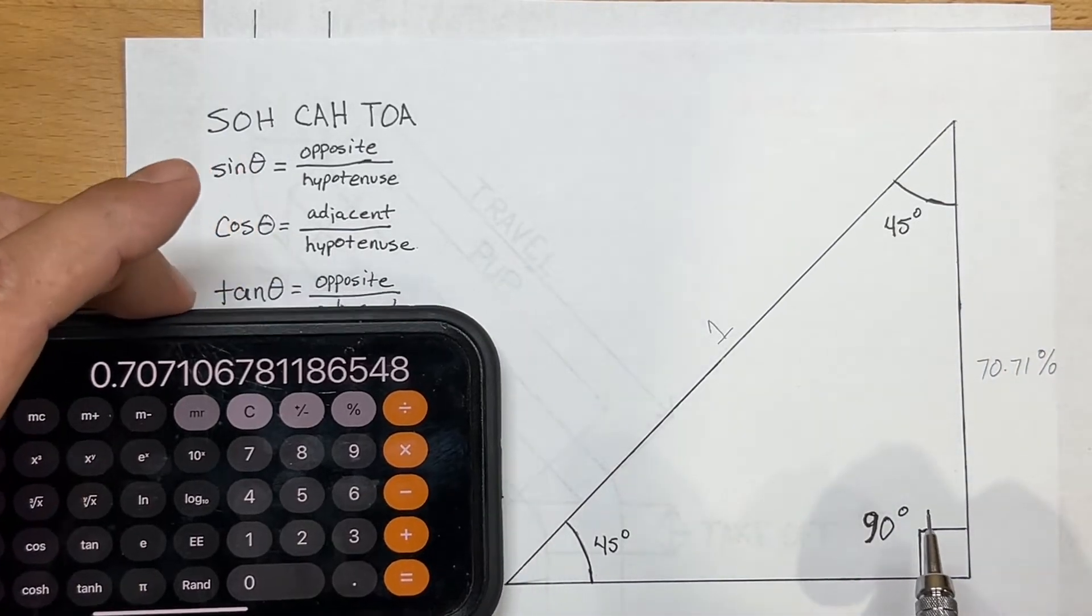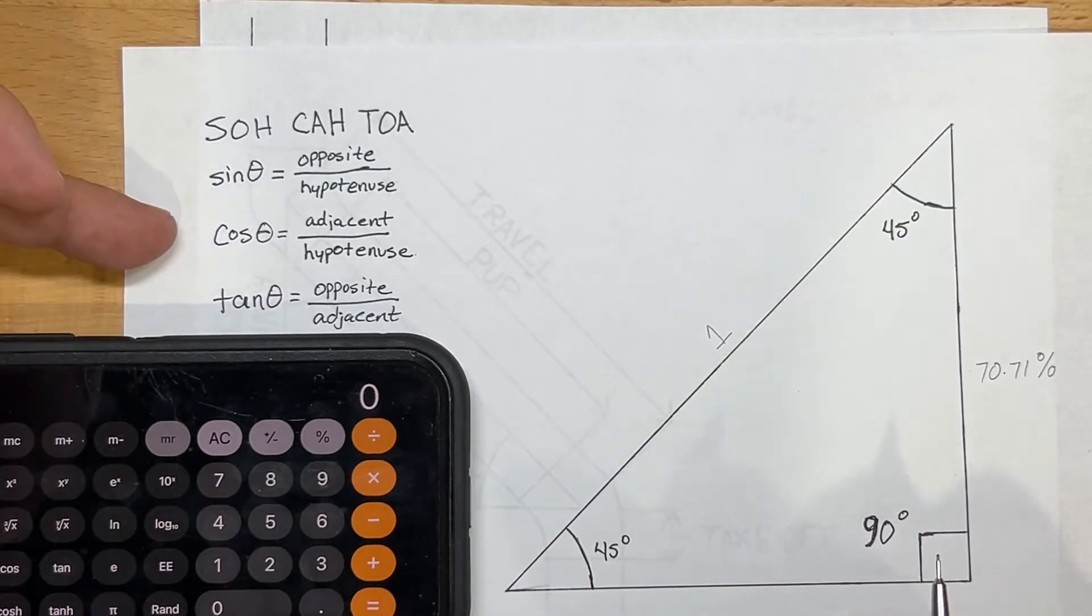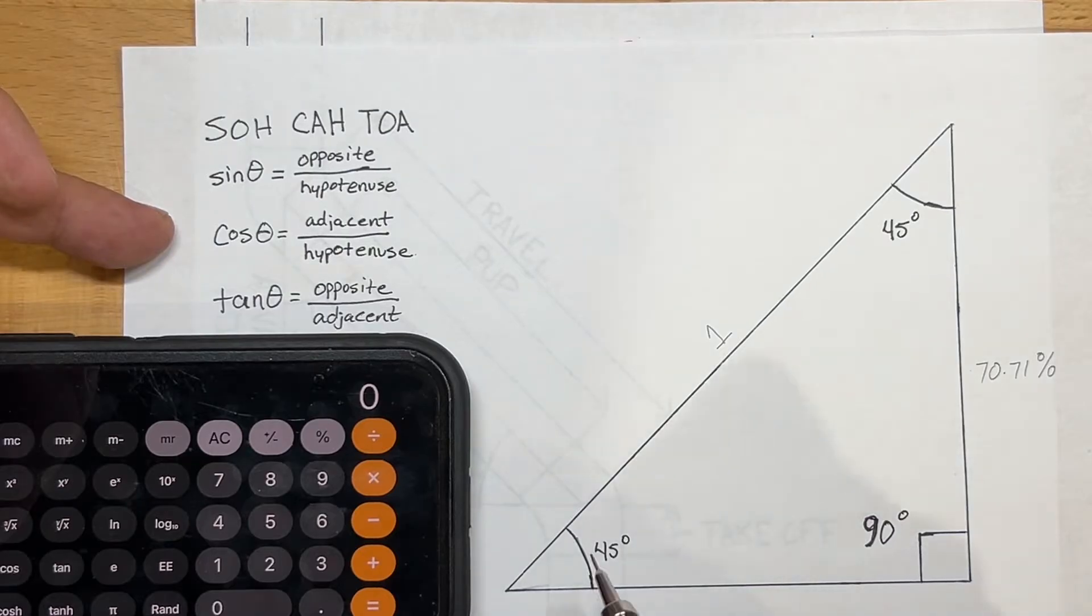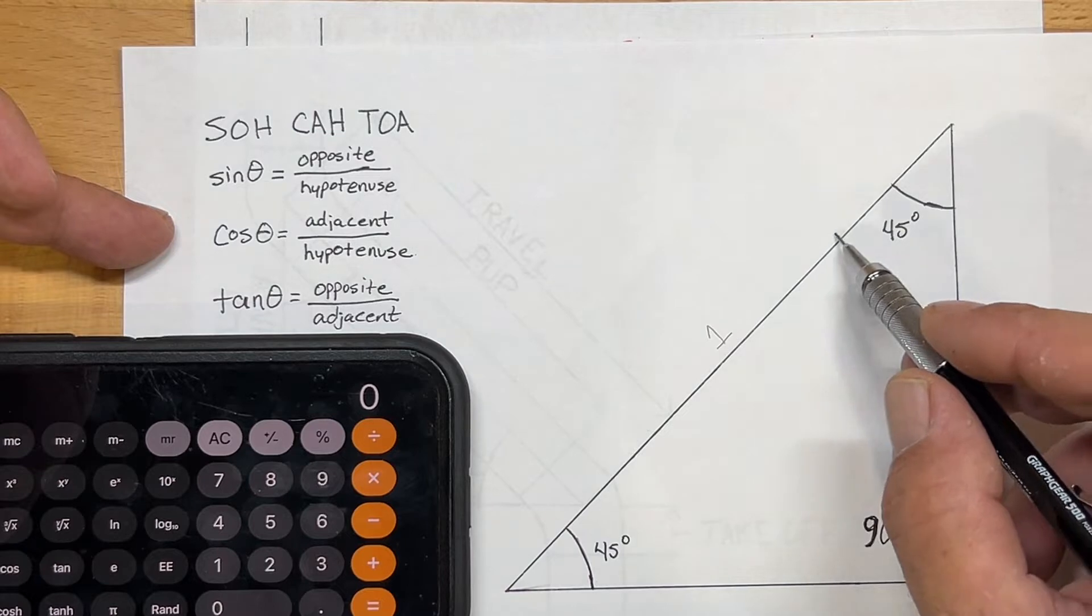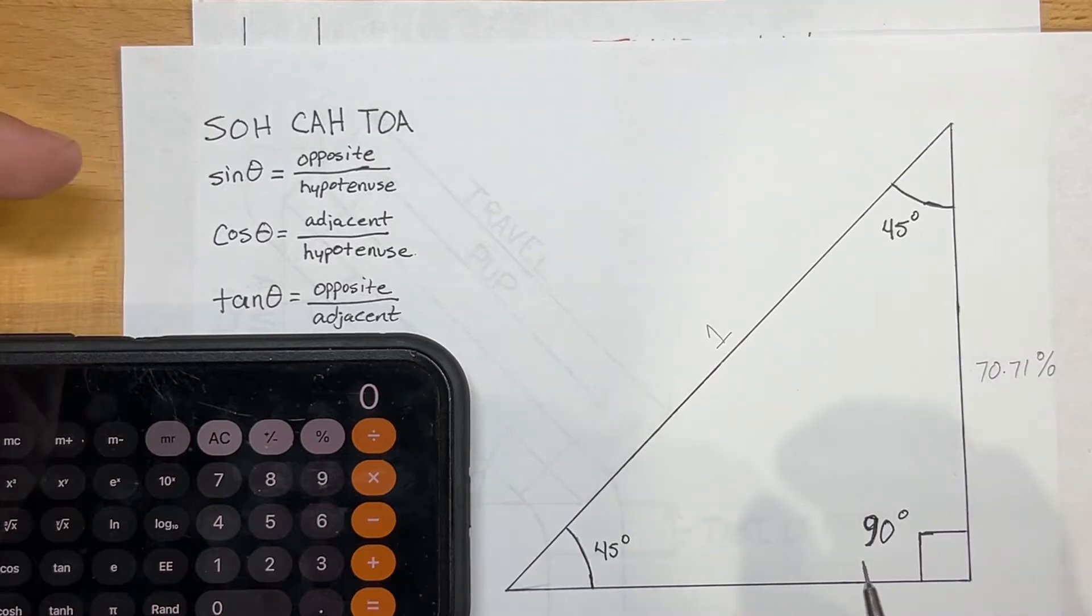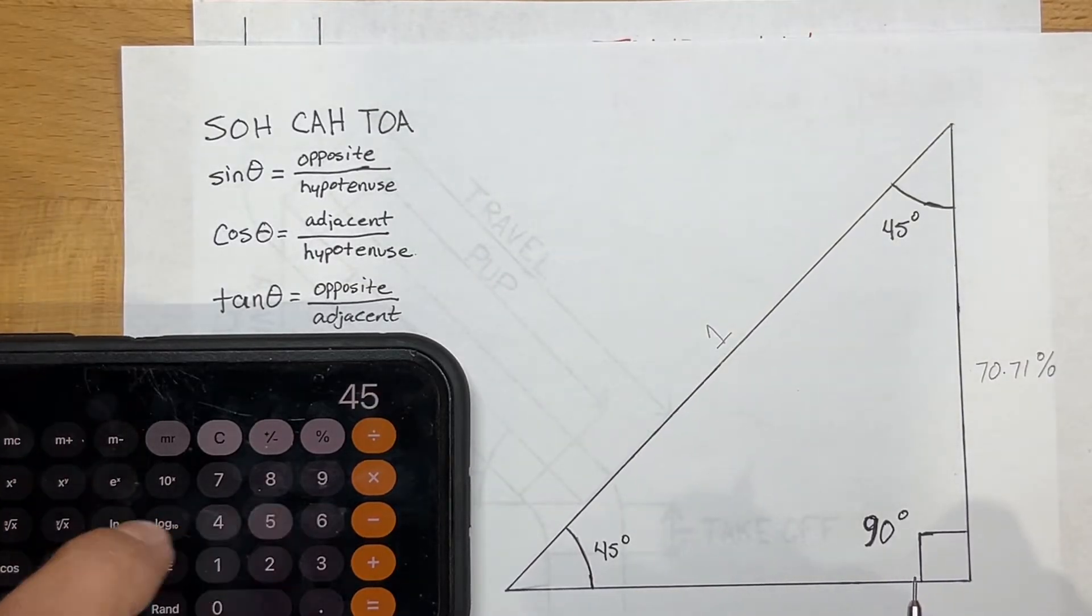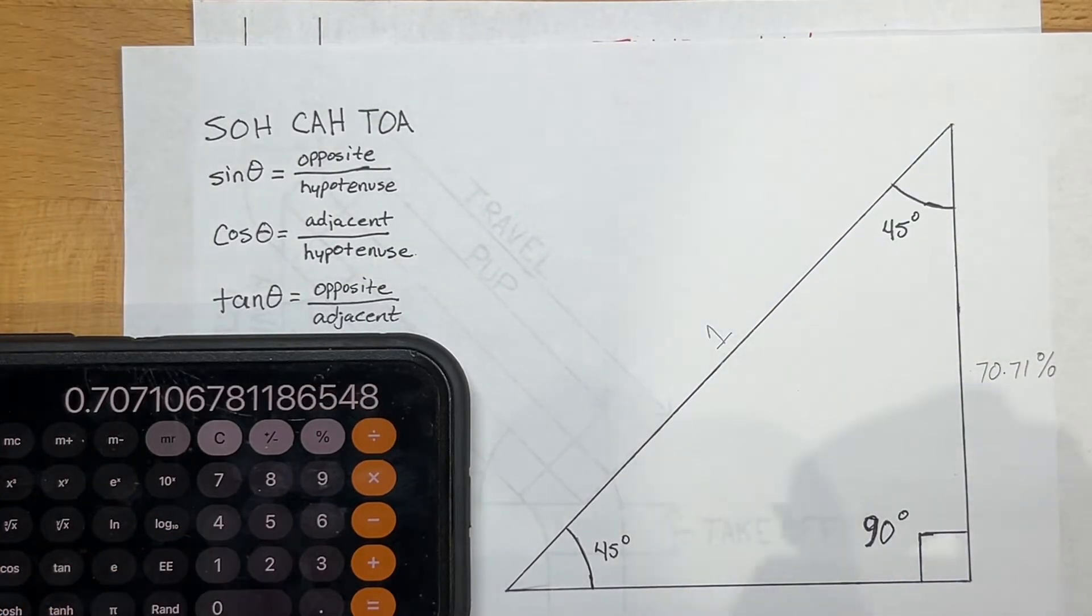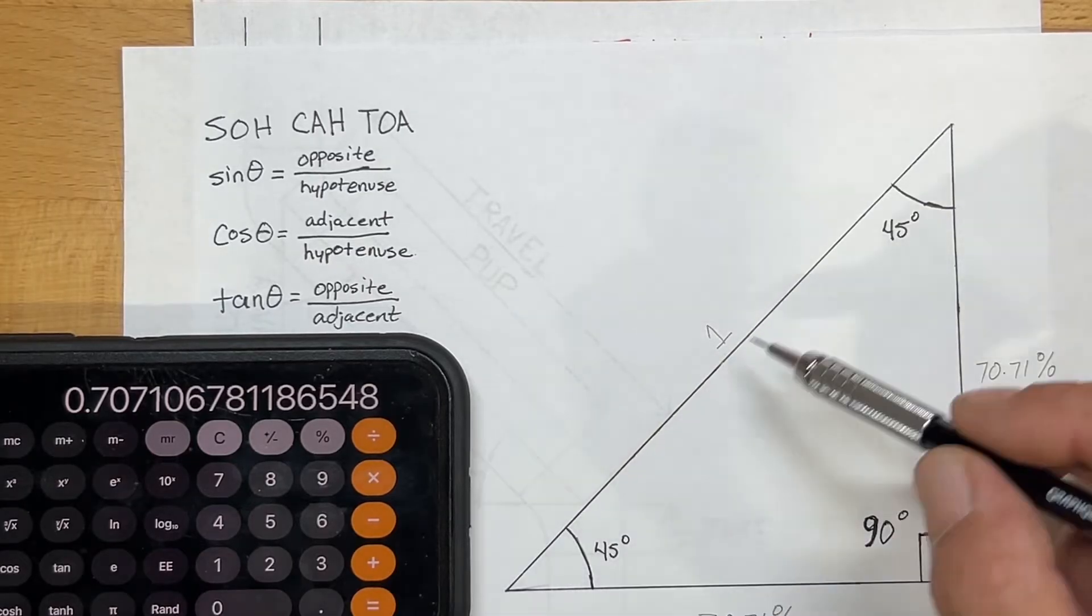And then if we were to do the same thing with cosine, it'll be the exact same number to solve for the adjacent side using this angle. So this angle, this side would be adjacent, this is your hypotenuse or your travel, and this is the opposite side. So using that same angle of 45, it's going to come up exactly the same. So if we do 45 cosine, you'll get exactly the same. So this side is also 70.71% the length of your travel.